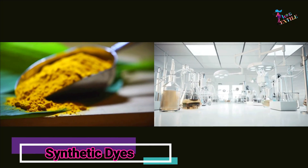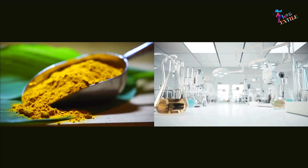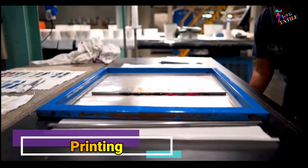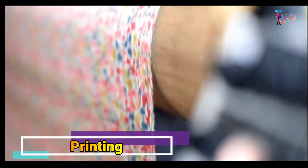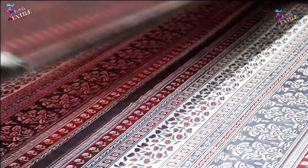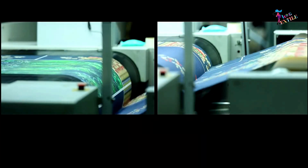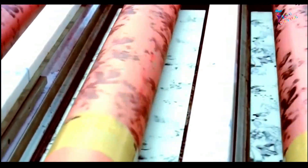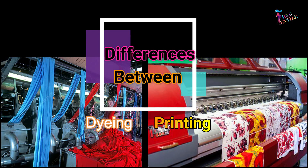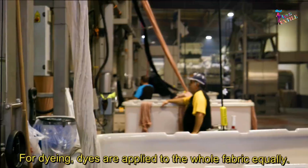Synthetic dyes are made in a laboratory. Printing means partial or localized dyeing. It can be described as the controlled placing of defined areas of color onto a substrate. Let's see some common differences between dyeing and printing.